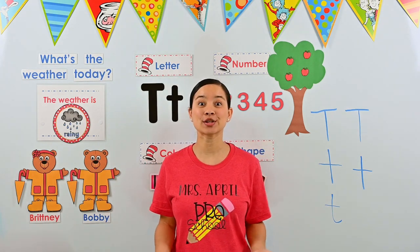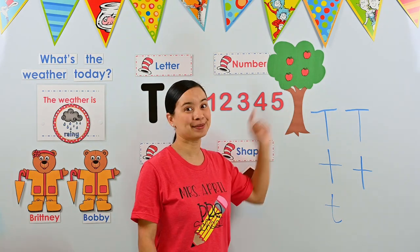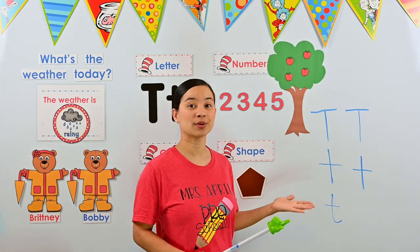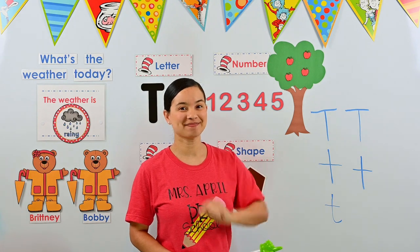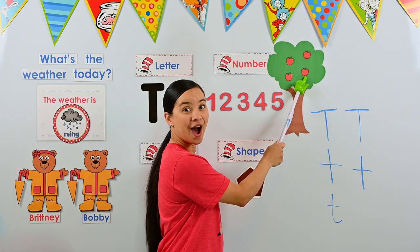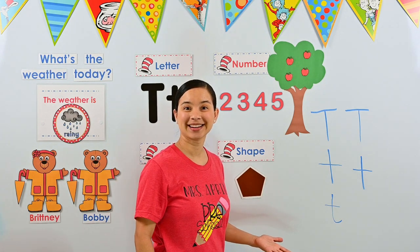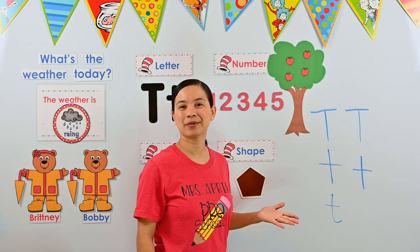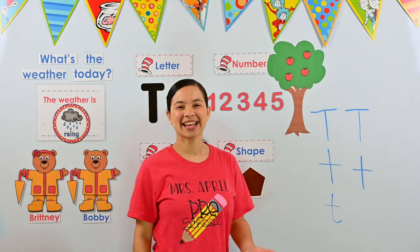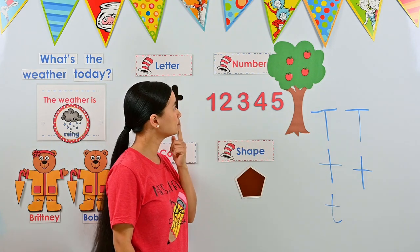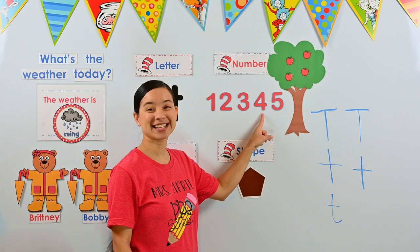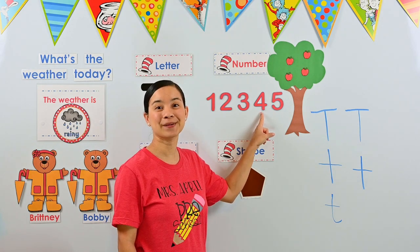Now that we've practiced writing the letter T, it's time to review our numbers of the week. This week we've been reviewing the numbers one through five. Let's see how many apples are on our tree today. Can you count the apples with me? I like to point when I count so I can keep track. Ready: one, two, three, four. We have four apples. Can you help me pick out which number is the number four? If you pointed to this number, you are correct — this is the number four!